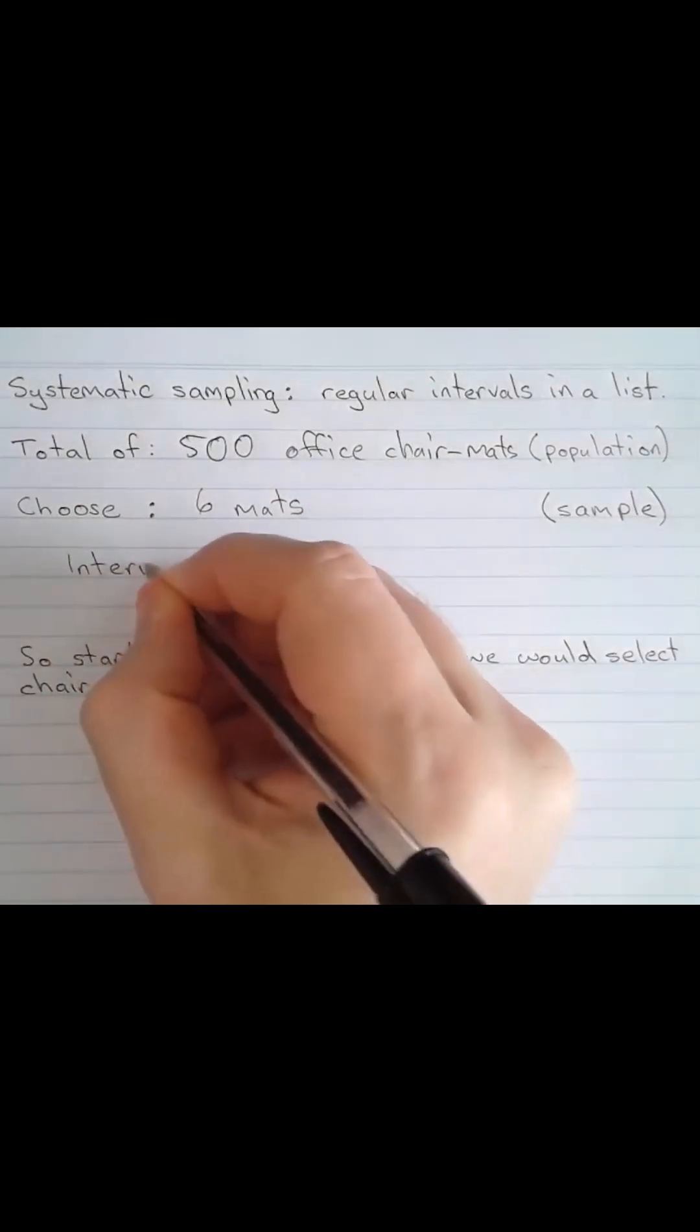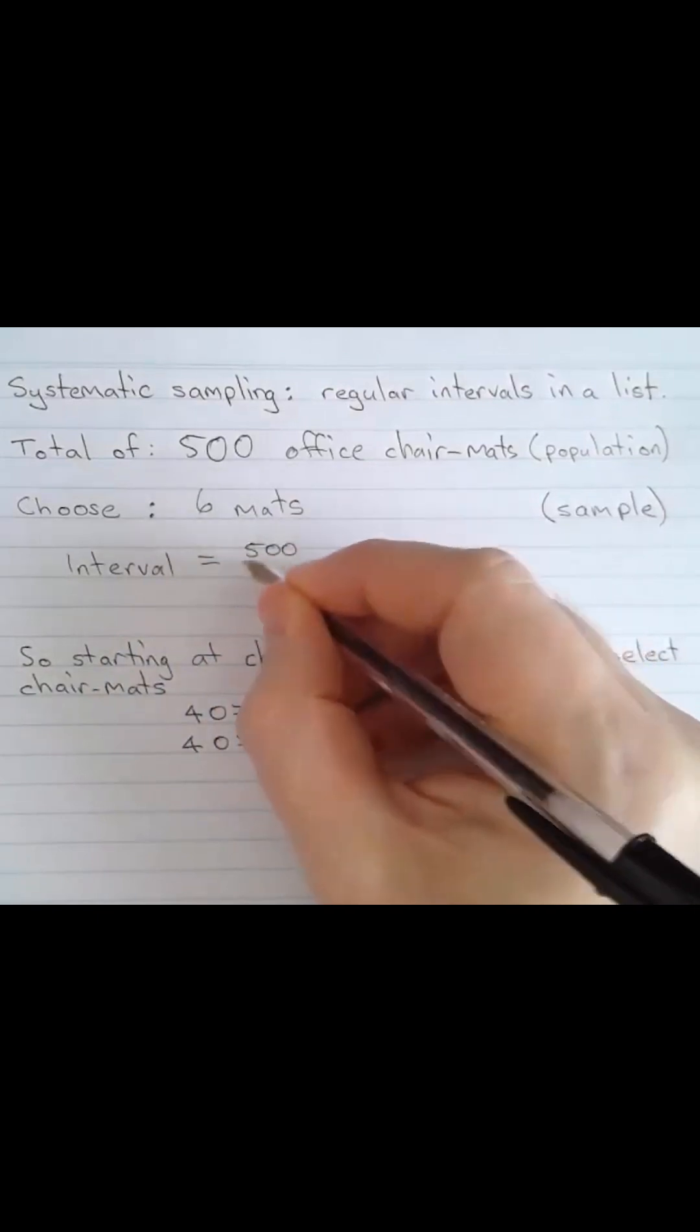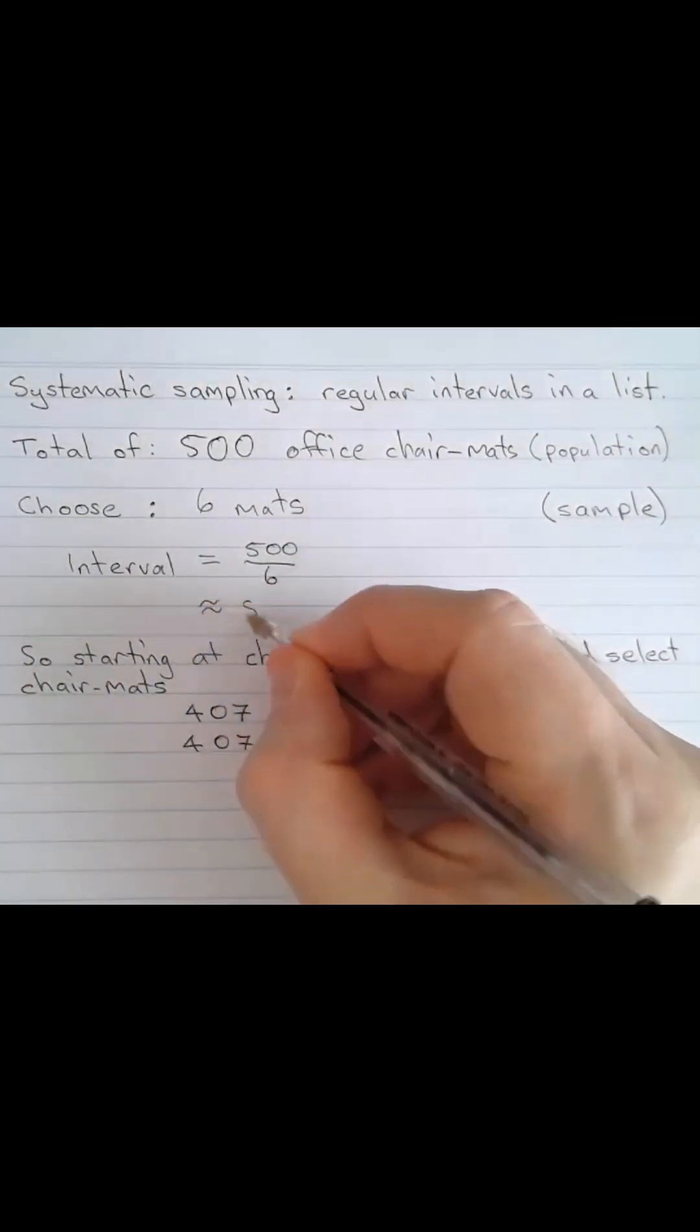The interval is equal to the total of 500 mats divided by the number that we want to choose. That's approximately 83.